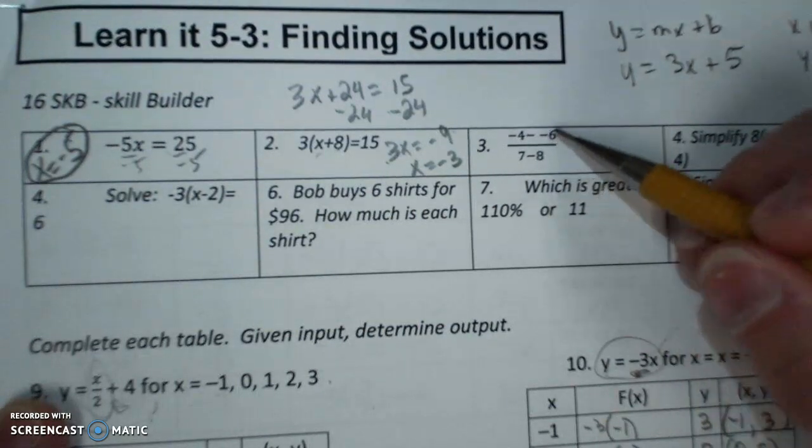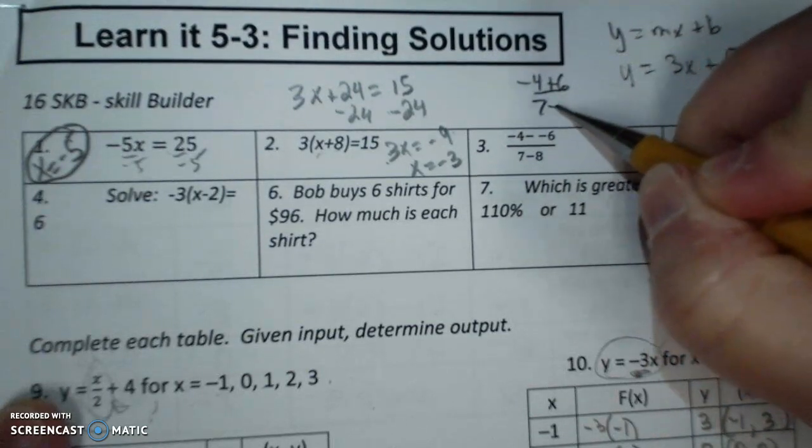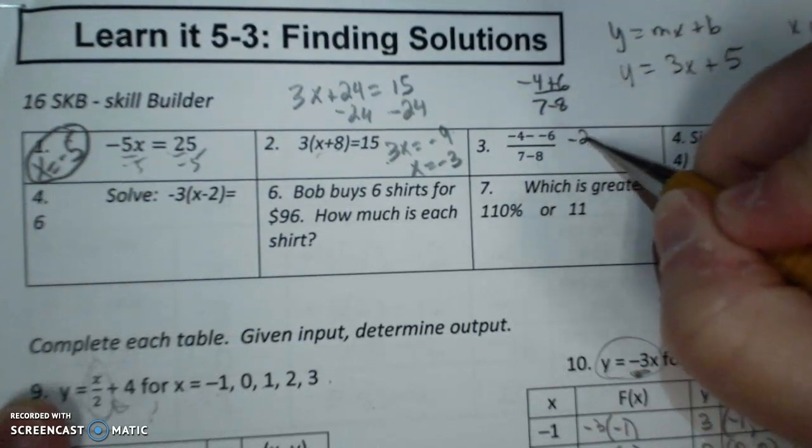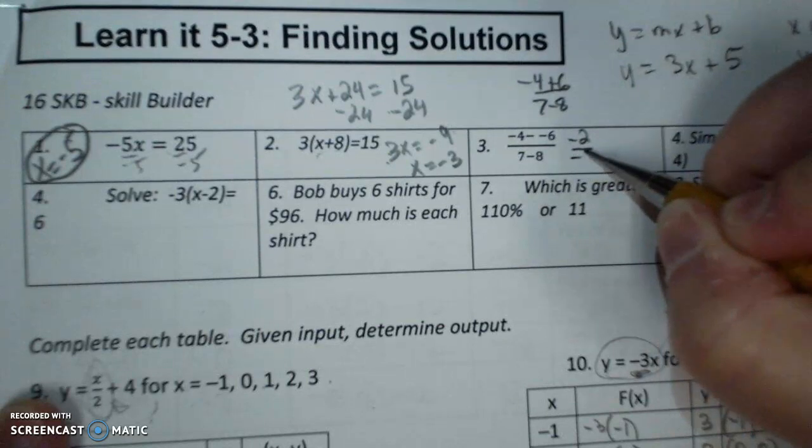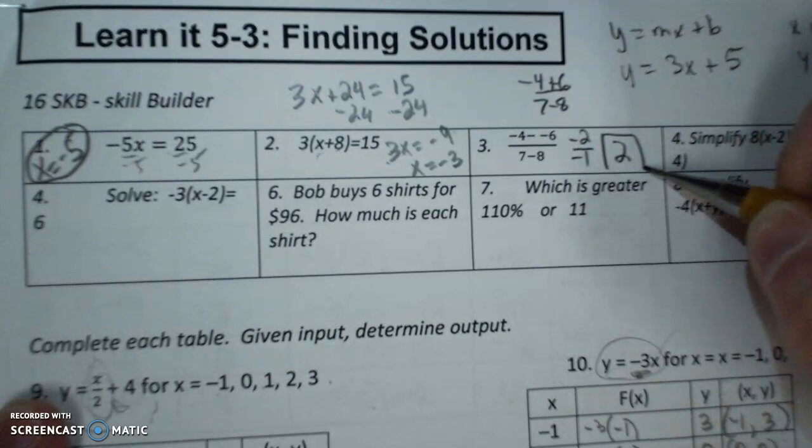Keep, change, flip. This becomes negative 4 plus 6 over 7 minus 8 becomes negative 2 over negative 1. A negative divided by a negative is a positive, and it's a positive whole number.